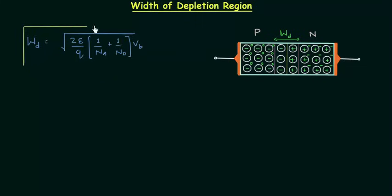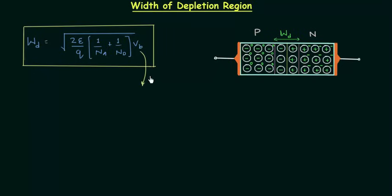The derivation is not important in this course — you only have to remember this formula and use it directly in numerical problems. In this formula we have Vb, which is the barrier potential. To calculate the width of the depletion layer you must know the formula for Vb, the barrier potential.